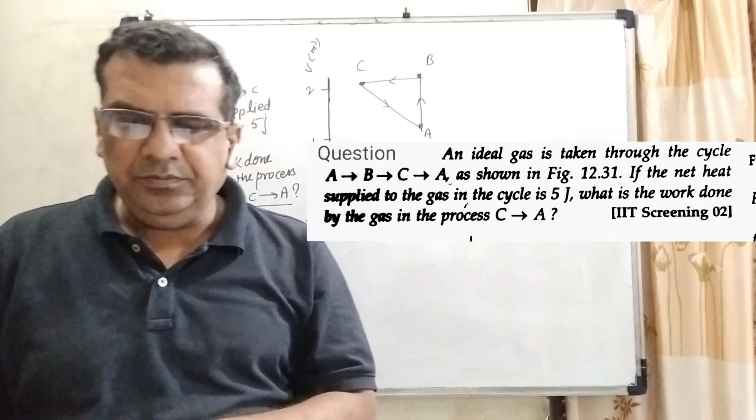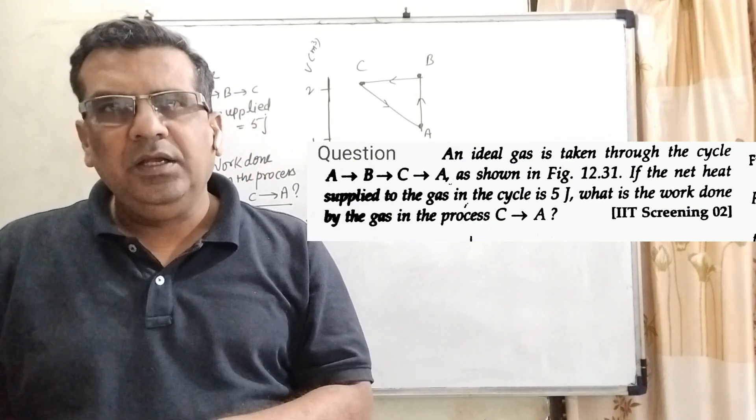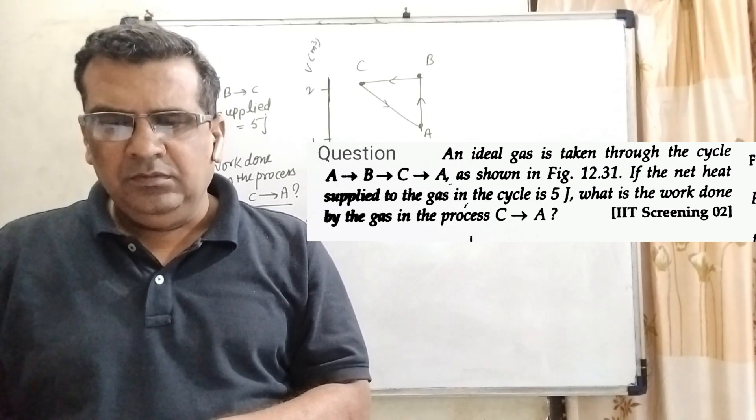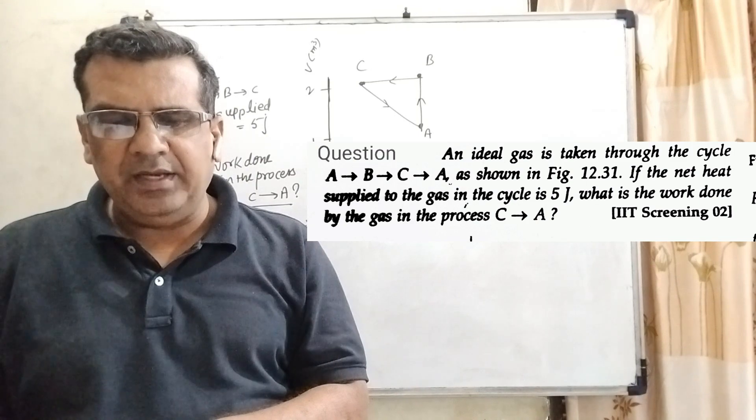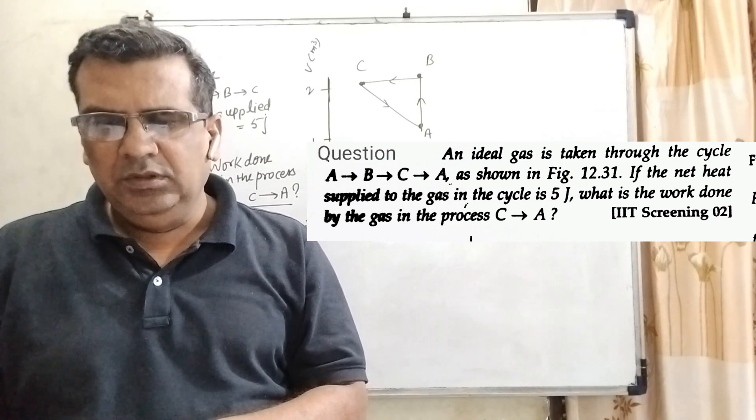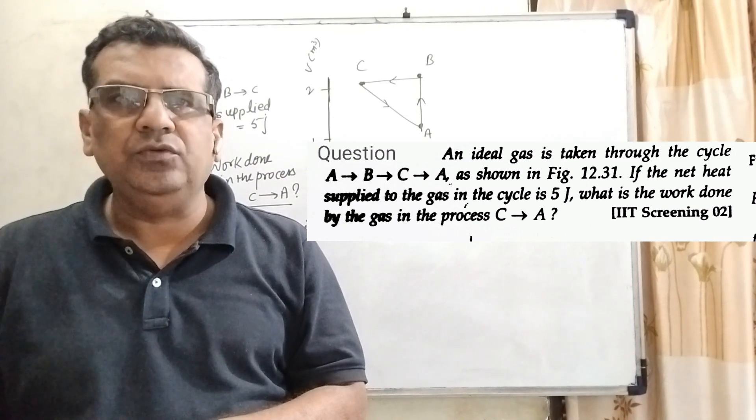Now, here is the question. An ideal gas is taken through the cycle A to B, B to C, and C to A. If the net heat supplied to the gas in the cycle is 5 joules, what is the work done by the gas in the process C to A?